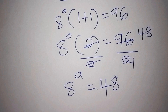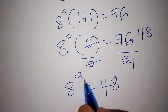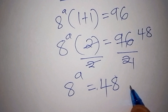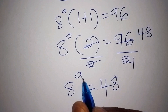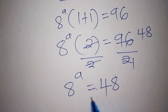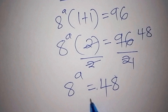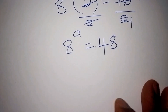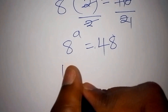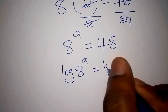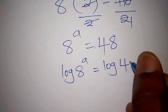We are still finding the value for A, because we have not finished with A yet. Here 48 is our whole number, 8 is the base, and A is the index. For us to find the value for A, we need to introduce the log from both sides. So we shall have log of 8 to the power of A equals log of 48.